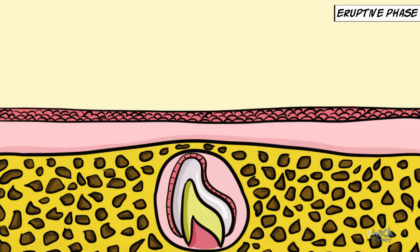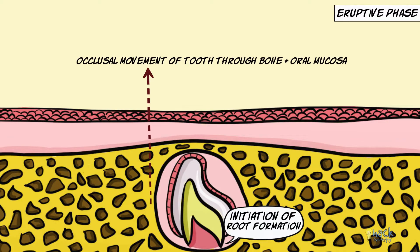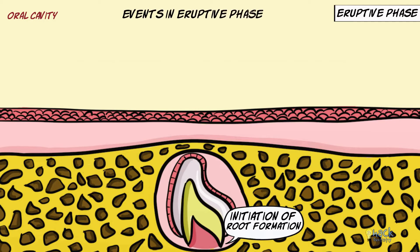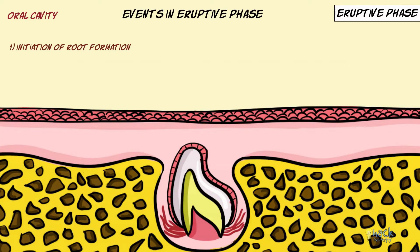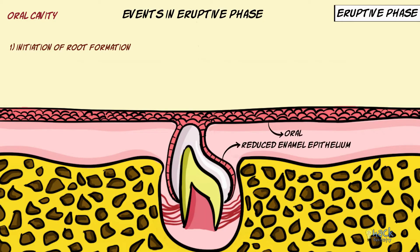The eruptive phase starts with the initiation of root formation and involves the occlusal movement of teeth through the bone and oral mucosa into the oral cavity where they attain functional occlusion. This phase begins when the epithelial root sheath starts to proliferate. The tooth erupts through the bony crypt and enters the connective tissue, then moves through the connective tissue and makes contact with the oral epithelium. When this happens, the reduced enamel epithelium covering the tooth crown fuses with the overlying epithelium.